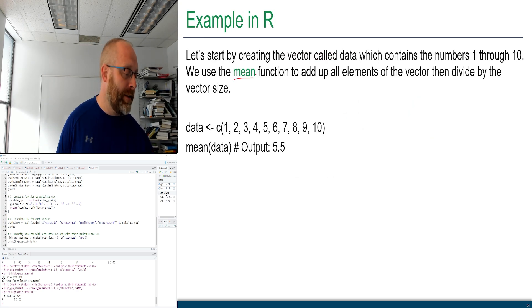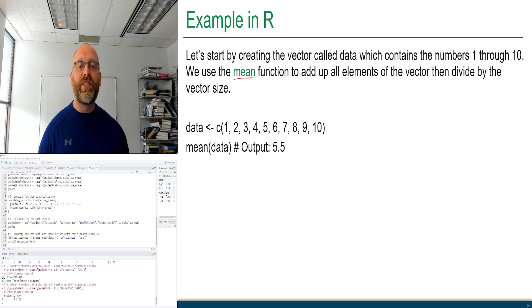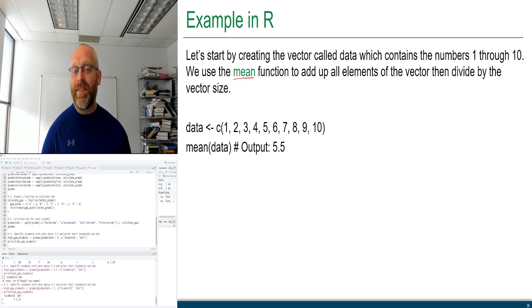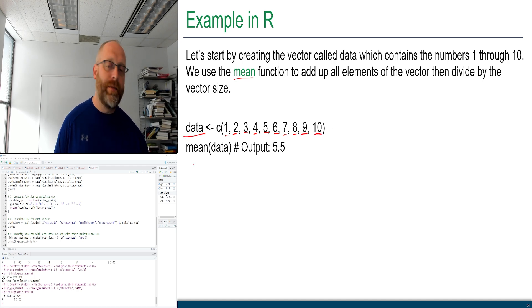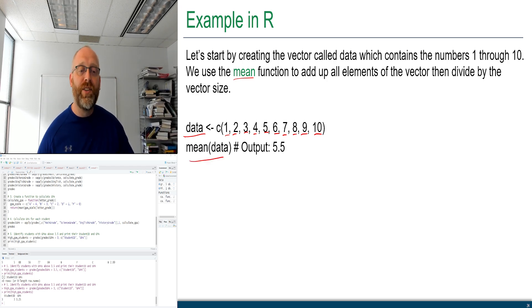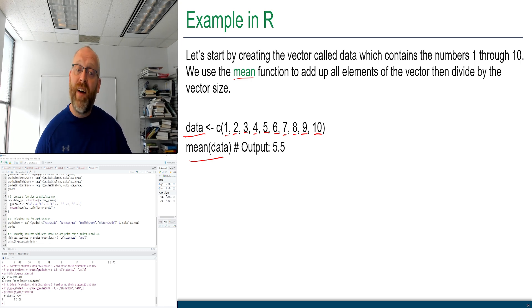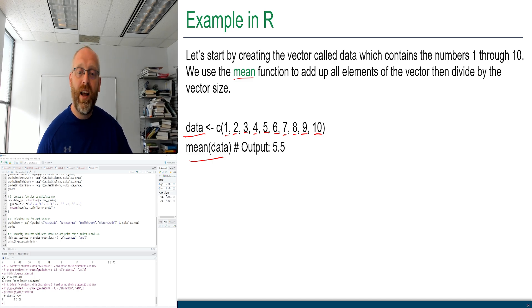In R, the mean function takes a vector and returns the average. For example: data <- c(1,2,3,4,5,6,7,8,9,10); mean(data) returns 5.5. Whether working with a sample or a population, we use the same mean function.